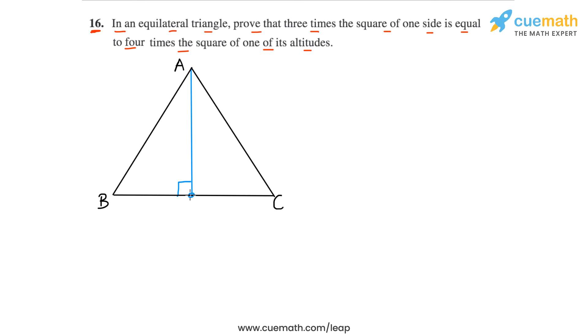Let's take the foot of the perpendicular as D. So AD is perpendicular to BC. So we have to show that three times the square of one side. So let's take that one side to be AB. We can take any of the three sides, but let's take it to be AB.